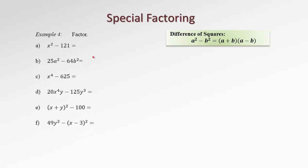In the first example we have the difference of x squared and 121, which is actually 11 squared. So if we recognize this, we can prepare two brackets, use the terms under the square, which are x and 11, and just use different signs, plus and minus, and we're done. It's really easy to apply this formula.